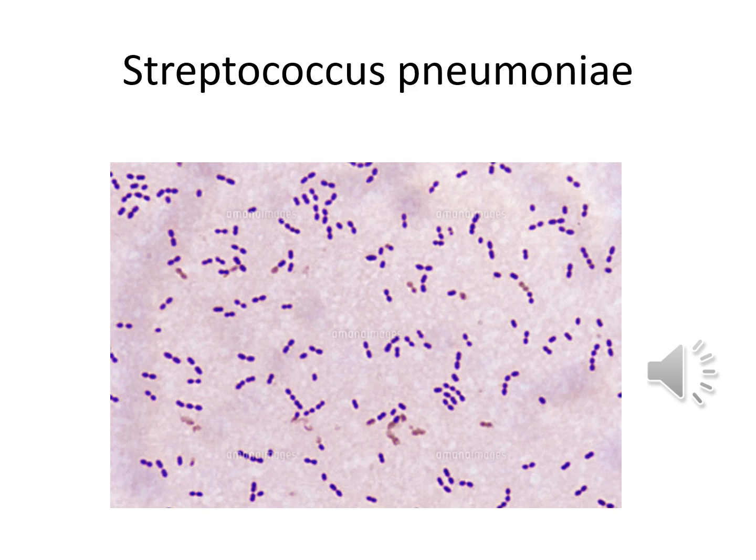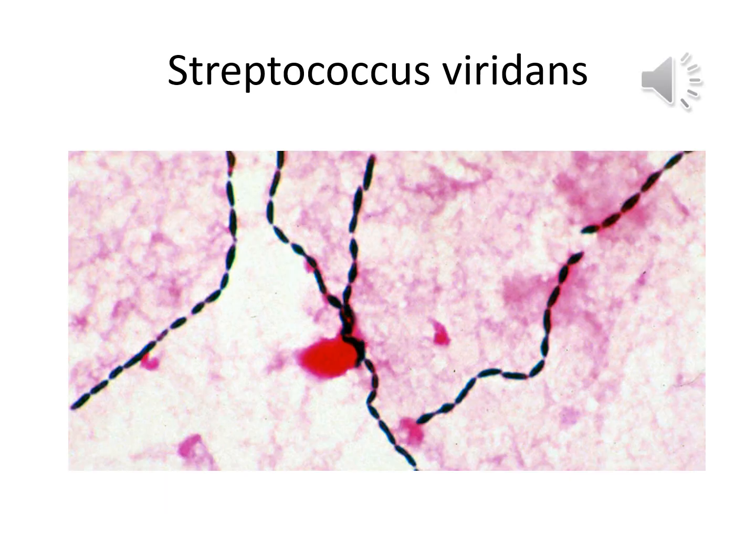This slide represents Streptococcus pneumoniae cells under light microscope. It is a gram-positive lancet-shaped coccus — elongated with a slightly pointed outer curvature — and usually seen as pairs (diplococcus), though it may also occur singly or in short chains. This slide represents Streptococcus viridans under light microscope, showing gram-positive cocci that usually form short to long chains and are often elongated.